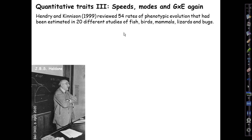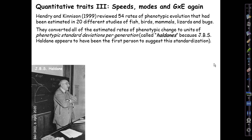The data on speeds come largely from a wonderful pioneering study by Hendry and Kinnison in 1999, who reviewed 54 rates of phenotypic evolution that workers had documented in 20 different studies of fish, birds, mammals, lizards, and bugs. They converted all of the estimated rates of phenotypic change to units of phenotypic standard deviations per generation. These are called Haldanes.